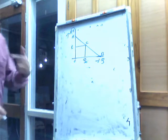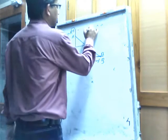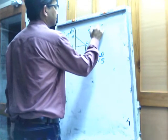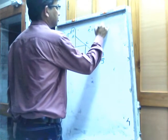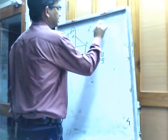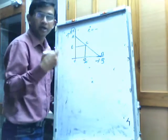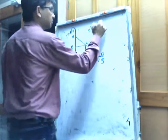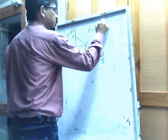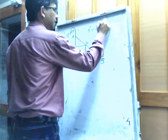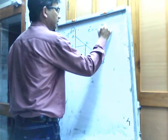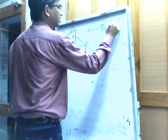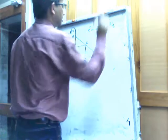We will use the formula for price elasticity of demand. We take the continuous form instead of the discrete form, so e equals minus dq by dp multiplied by p by q.